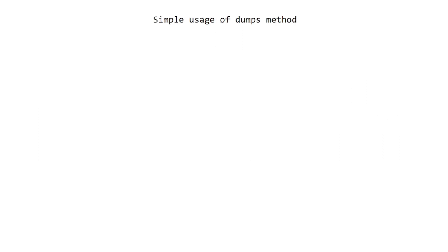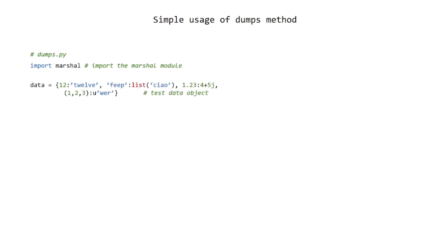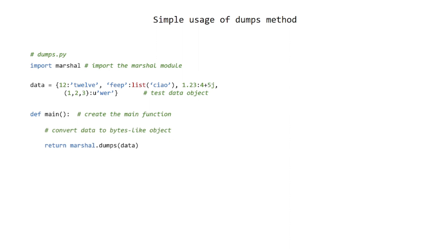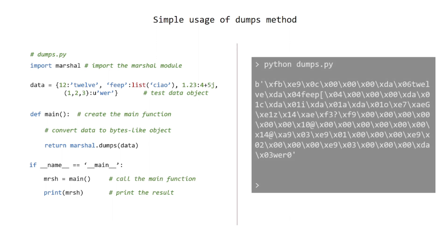Simple usage of the dumps method. Create a dumps.py file. Import the Marshall module. Add a test data object. Create the main function. Convert data to a bytes-like object. Call the main function and print the result. Run in terminal and see the results.